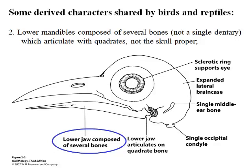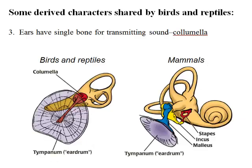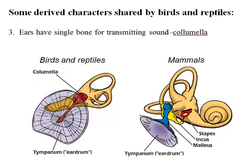Third, the ear: birds and reptiles have a single bone for transmitting sound to the inner ear — the columella. Mammals, on the other hand, have the malleus, incus, and stapes system — three bones transmitting sound to the inner ear.